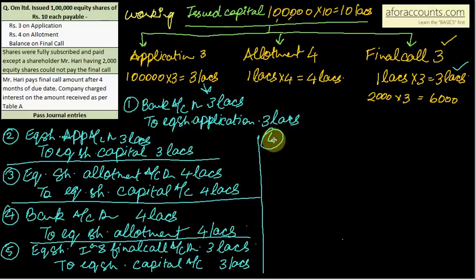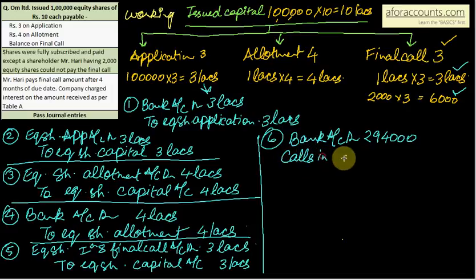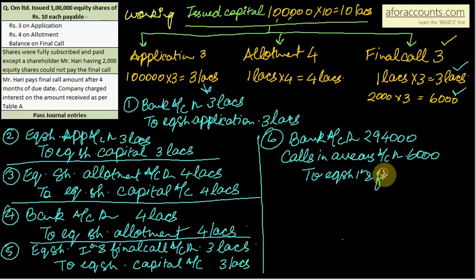Now sixth entry, paisa receive karne ki entry. Everything was received except rupees 6,000. Bank account debit 3 lakhs minus 6,000 equals 2 lakhs 94,000. Baaki call in arrears ho gaya. Call in arrears account debit 6,000 to equity share first and final call 3 lakhs.